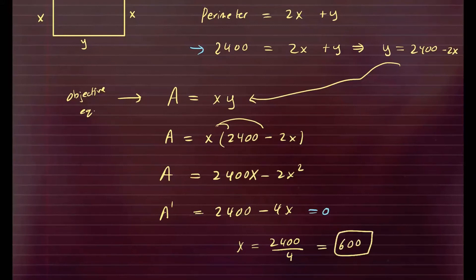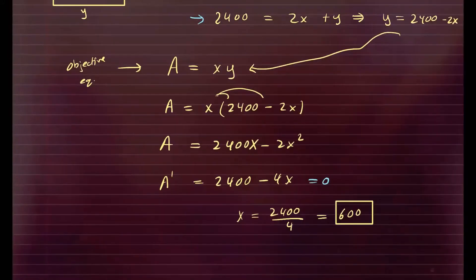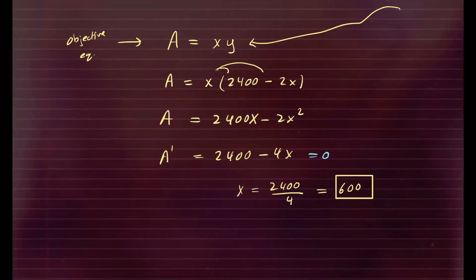Alright, so that's the measurement for x. Now let's see if that's going to give us the maximum area. We go back to our first derivative and see if the second derivative is concaved down. So take the second derivative, and you'll get negative 4, which is negative. So that means this is concaved down. That means your function will have the maximum value at this critical number.